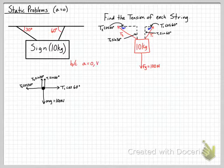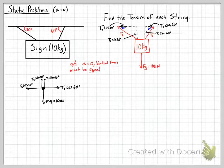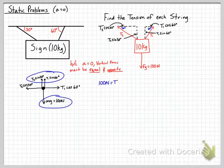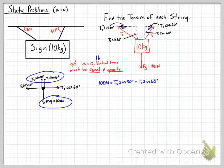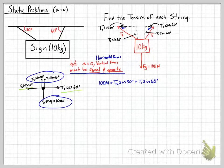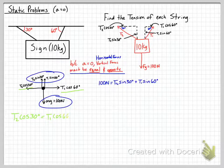Because acceleration is zero, vertical components must be equal and opposite, and horizontal components must be equal and opposite. So our y equation is: 100 newtons equals T2 sine of 30 degrees plus T1 sine of 60 degrees. Our x equation is: T2 cosine of 30 degrees equals T1 cosine of 60 degrees.